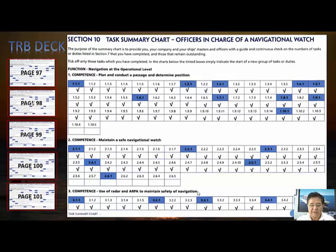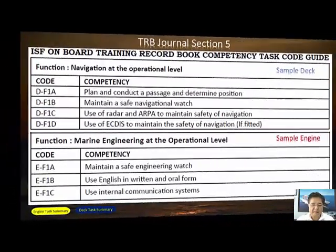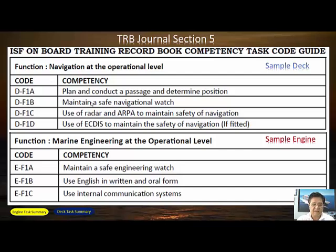For section three, you need the code for each competency, so check section five for the task codes. Write down the competencies so you can look them up. For deck, the three task codes correspond to: plan and conduct, maintain safe watch, and use of radar. Copy these codes — they are what matters in section three, as everything is entered by code.